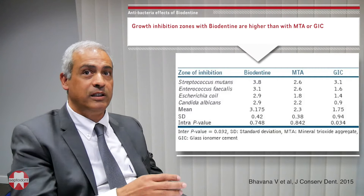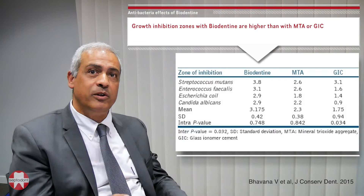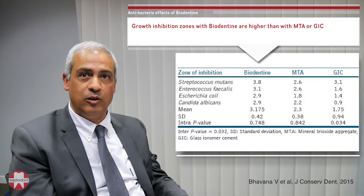This has been demonstrated on different bacterial strains, and the highest growth inhibition zone was obtained with Biodentine as compared to MTA or glass ionomer cement.